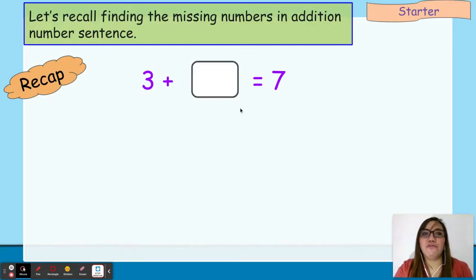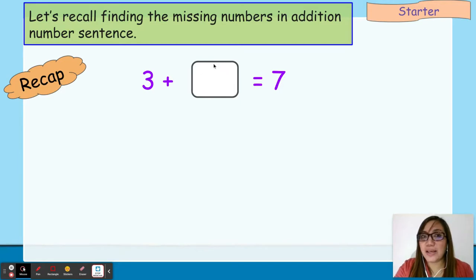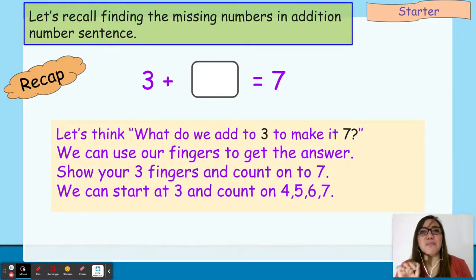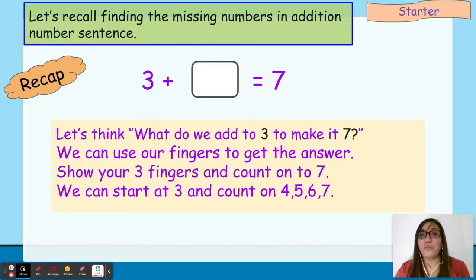Let's recall finding the missing numbers in addition number sentences. For example, we have 3 plus blank equals 7. How are we going to find the missing number? When you have a missing number in an addition number sentence, you have to think: what do we add to 3 to make it 7? We can use our fingers to get the answer. Show your 3 fingers and count on to 7.